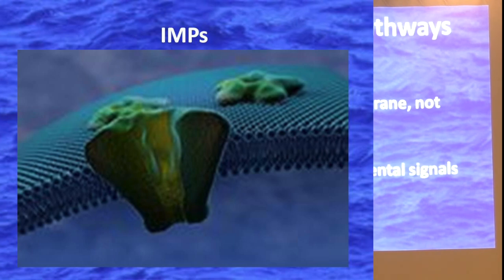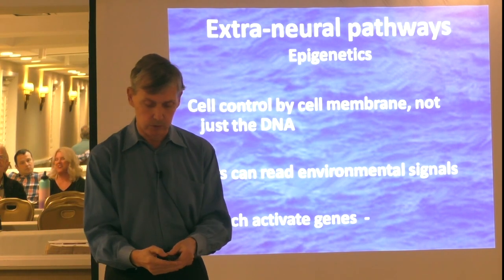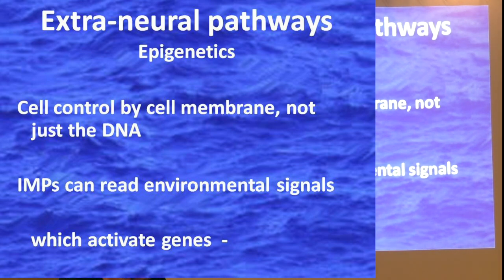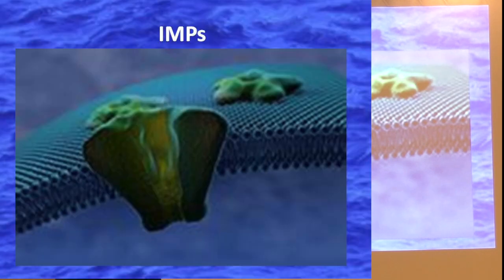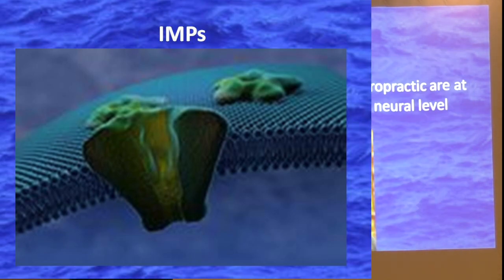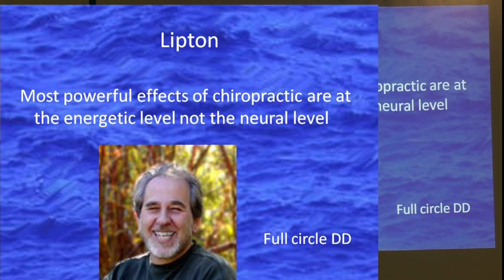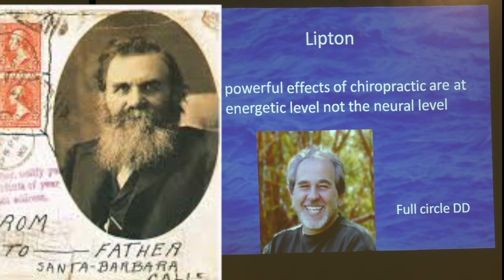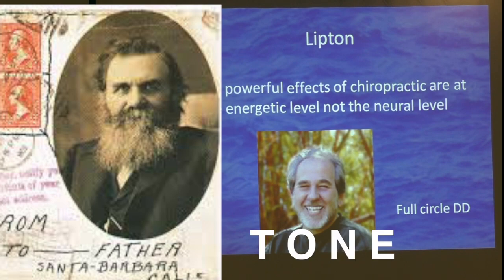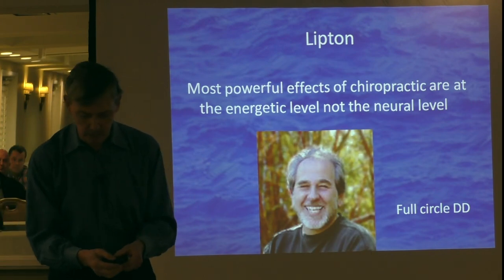Bruce Lipton talks about intramembrane proteins — proteins in your cell membranes that are able to read environmental signals and then transmit these signals to your brain and to the cell, activating the genes. These intramembrane proteins are receptors of information from the environment. This is not a theory; it has been completely documented. Lipton says the most powerful effects of chiropractic are at the energetic level, not the neural level — coming full circle to DD's concept of tone.